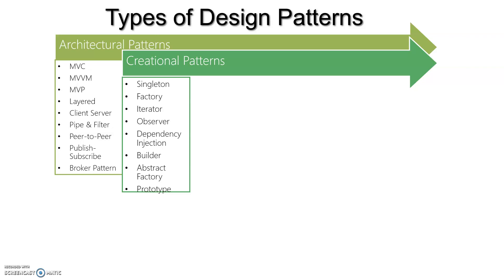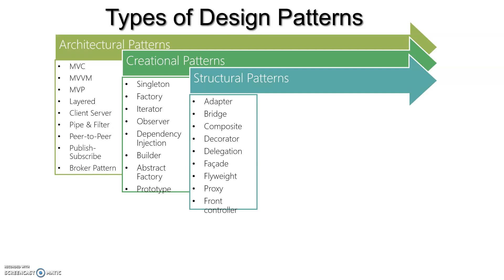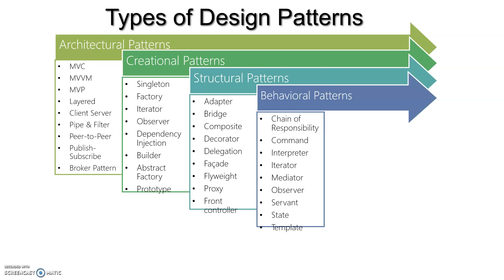The next type is creational patterns — these help you create objects in various ways. For example, Singleton helps you create a single object for your entire project rather than creating multiple objects whenever required. Each creational pattern helps you create objects through different mechanisms. Next are structural patterns, which identify simple ways to realize relationships between entities — examples include Adapter, Bridge, and Composite.